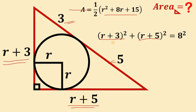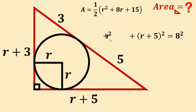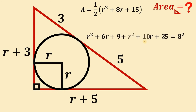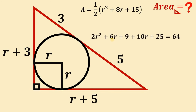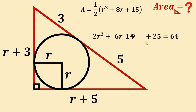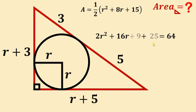Let's simplify. (R plus 3) squared gives us R squared plus 6R plus 9. And (R plus 5) squared gives us R squared plus 10R plus 25. And 8 squared equals 64. Combining like terms: R squared plus R squared gives 2R squared; 6R plus 10R gives 16R; and 9 plus 25 equals 34.